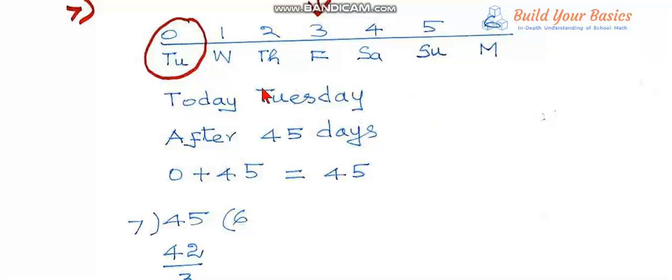Now for 0, I take Tuesday. Today is Tuesday, I take Tuesday to correspond to 0. Now we want that day after 45 days, so 0 plus 45, that is 45.